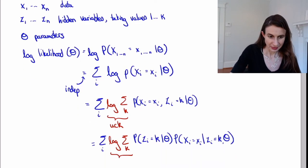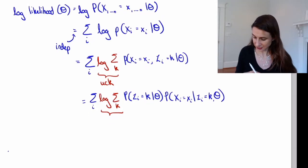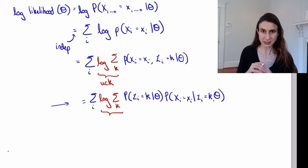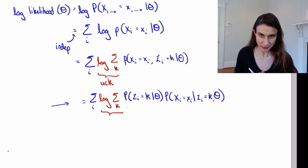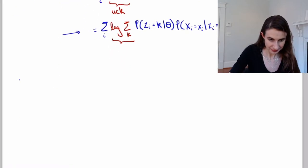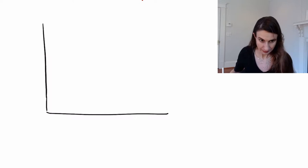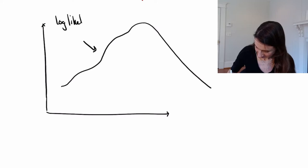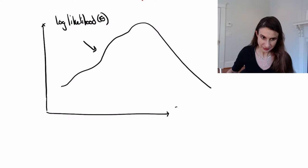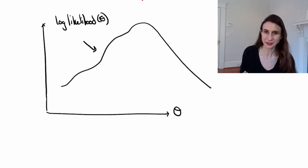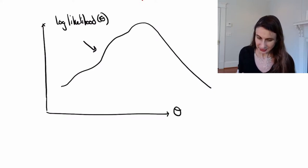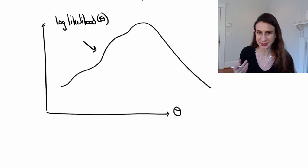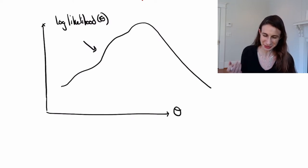So that's the problem — that's where we stand. The idea of EM is to find a lower bound on this quantity that allows us to maximize it. Here's our log likelihood, which is a function of theta, and we're trying to maximize it. We want to find the highest likelihood values of the parameters — in the case of Gaussian mixture models, the mixture weights, mixture centers, and the mixture covariances.